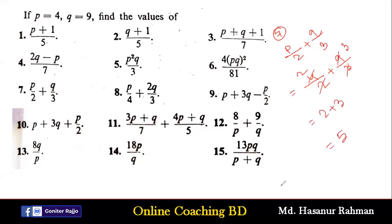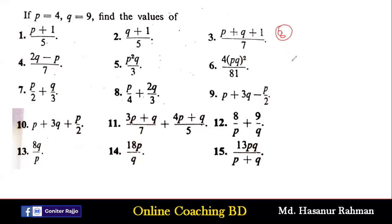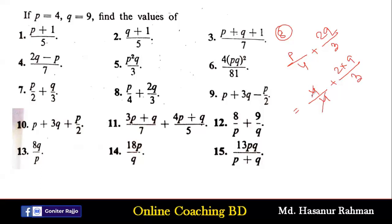Very simple. Now number 8 says p/4 + 2q/3. The value of p is 4, so 4 by 4, plus the value of q is 9, so 2 multiplied by 9 by 3. 4 by 4 is 1, and 9 divided by 3 is 3, so 1 plus 2 multiplied by 3 is 6, and 6 plus 1 equals 7. That is the solution of number 8.